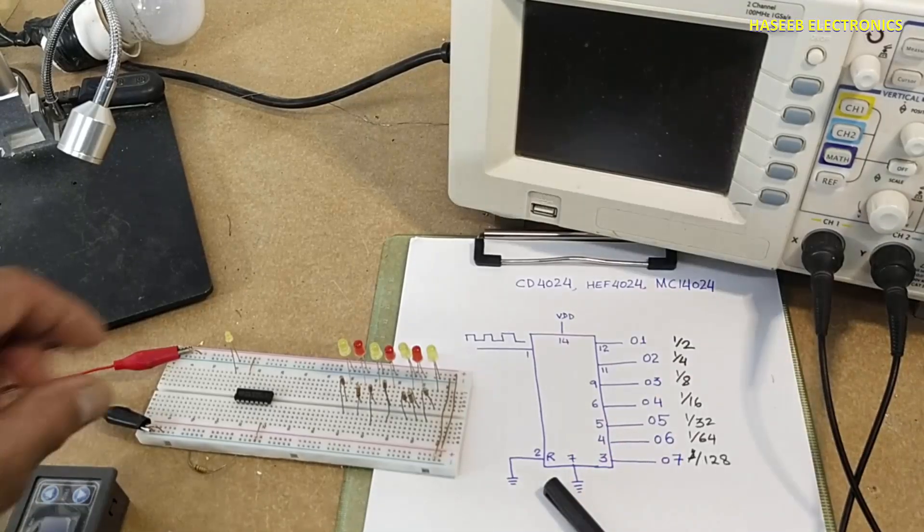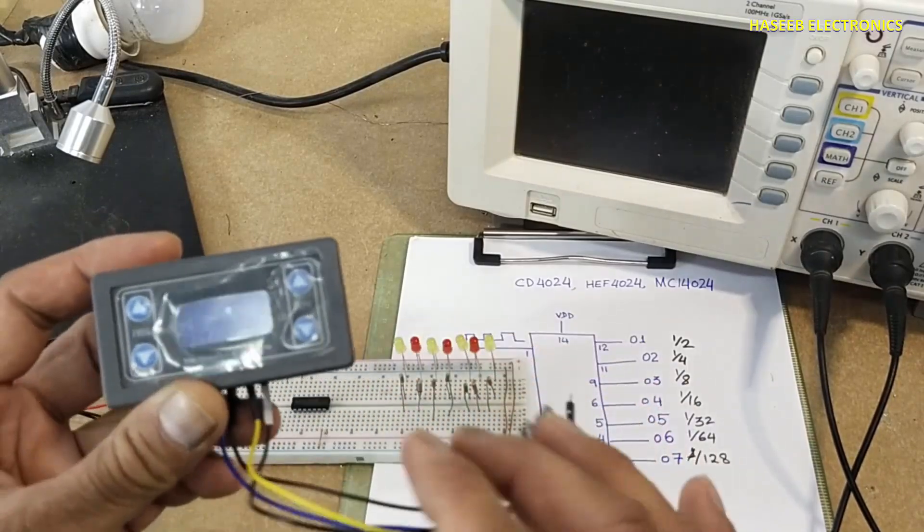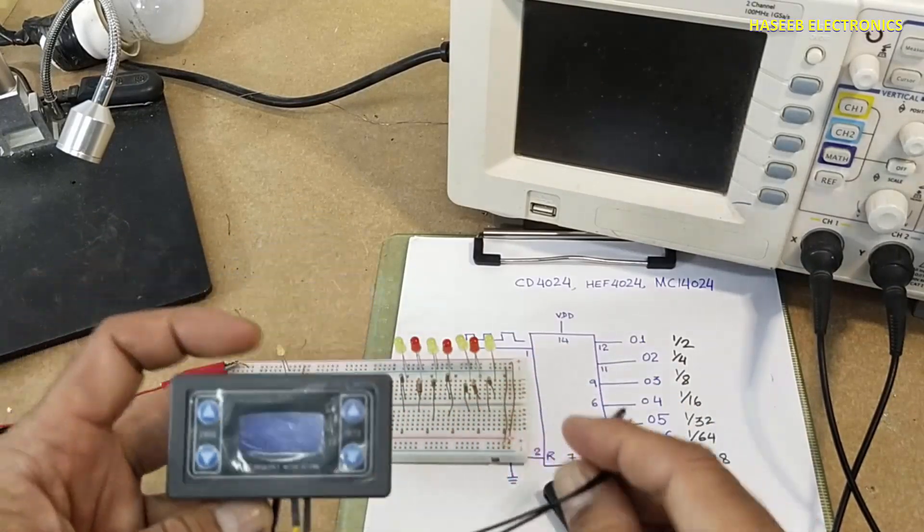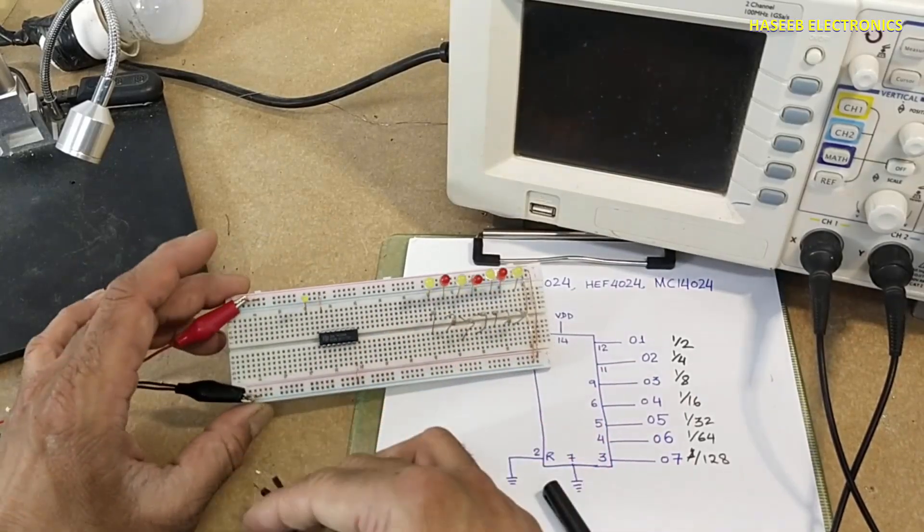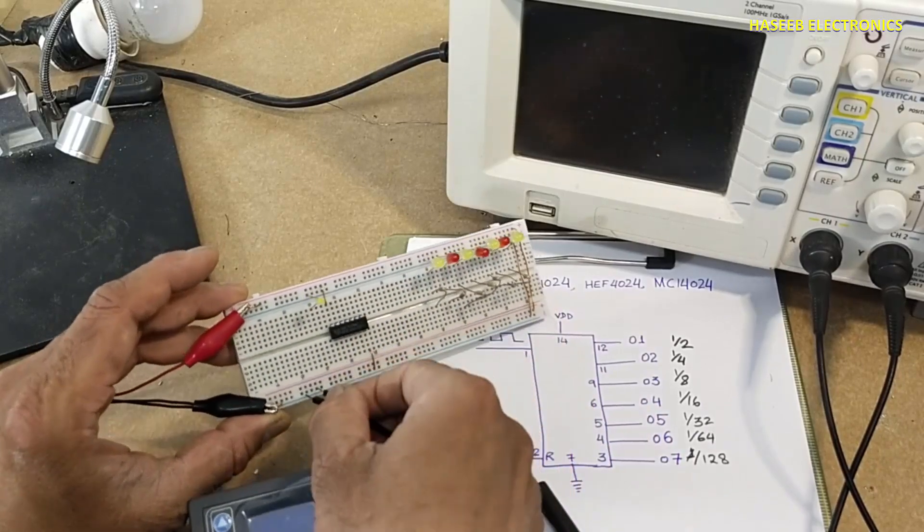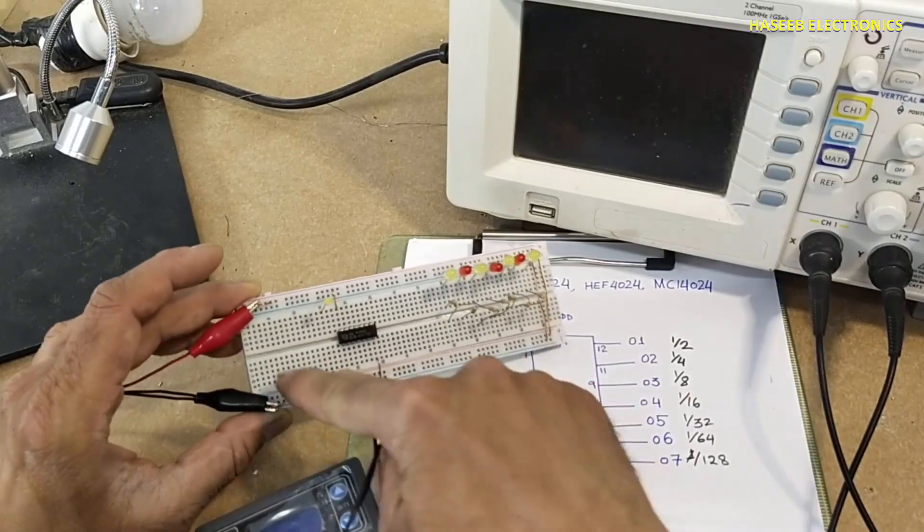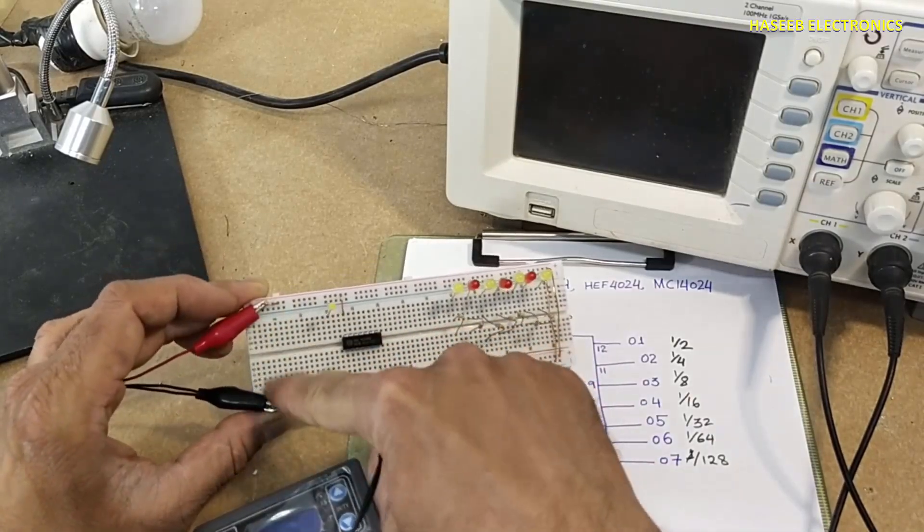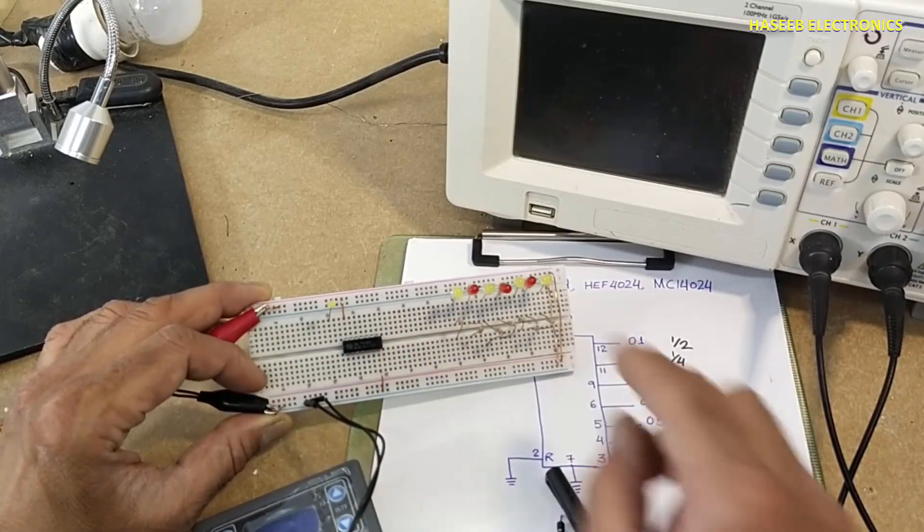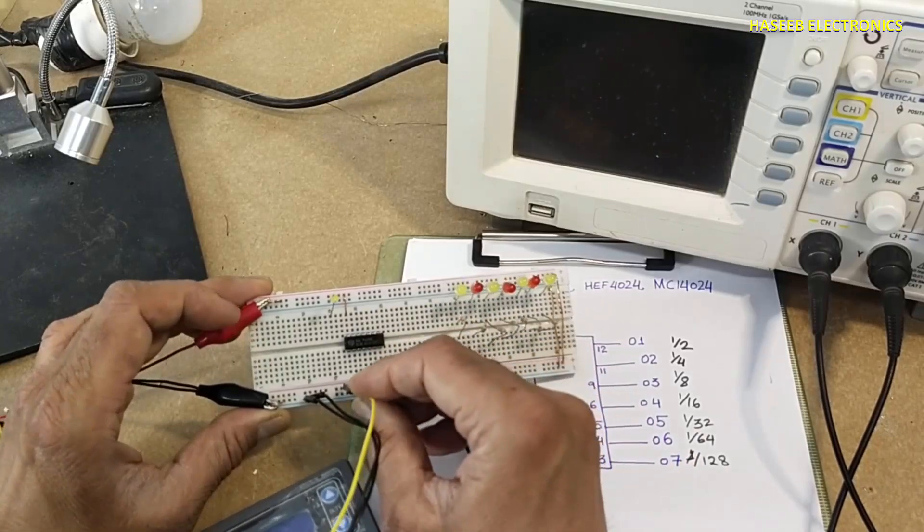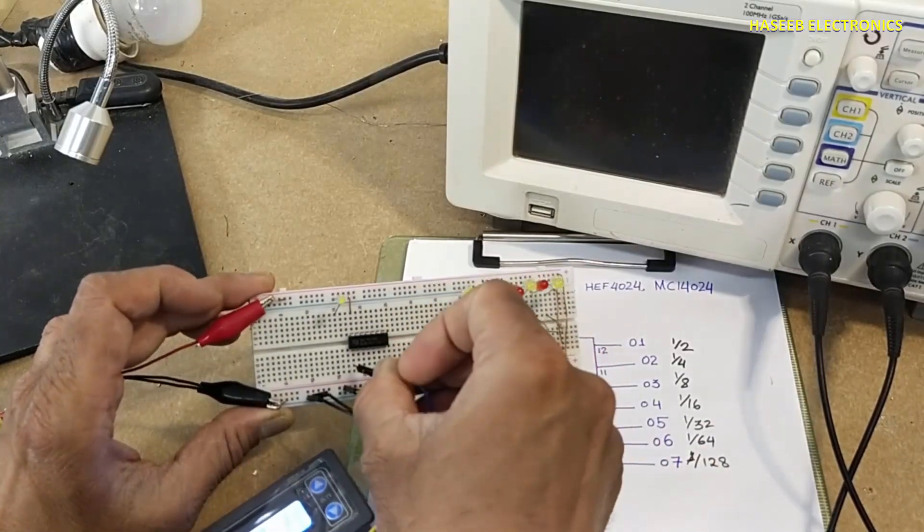Let's connect it practically. Pin number 1 is clock signal. Any signal which you are going to count, or if any signal frequency you want to divide - I am using this PWM generator. Power ground and signal ground are connected to this ground. I am connecting 5 volts here. Ground at pin 7, VDD at pin number 14. Positive voltage here and signal at pin number 1.